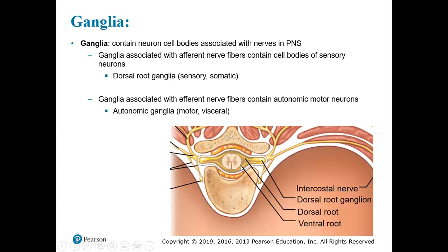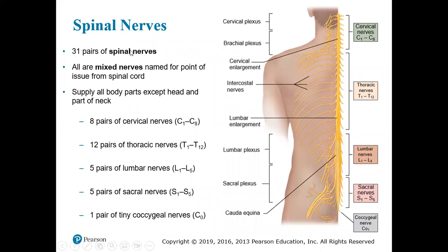We can see the dorsal root and the ventral root here as well. When we talk about spinal nerves, there are 31 pairs of spinal nerves. All are mixed and they're named for the point of issue from the spinal cord. For example, remember that we have seven cervical vertebrae, but we will have eight cervical nerves because of how they exit. There will be a nerve root exiting between C0 and C1 — C0 is the occiput — and the C8 nerve root exits below your seventh cervical vertebra.